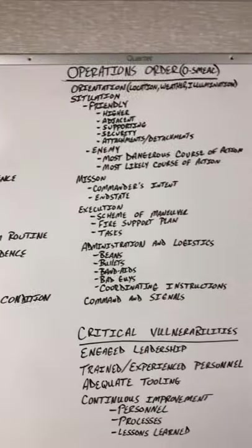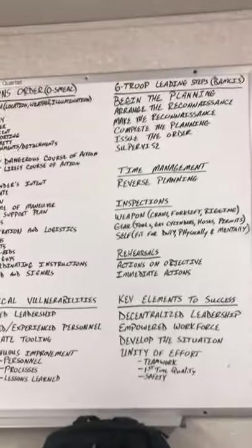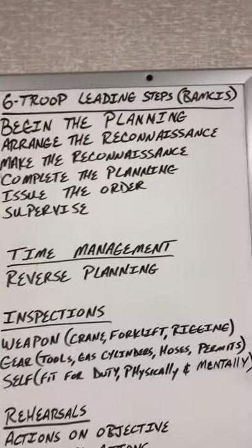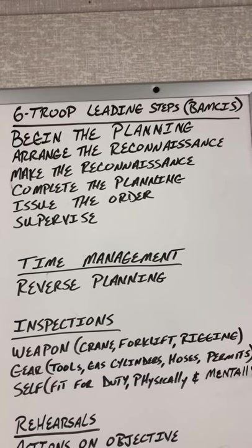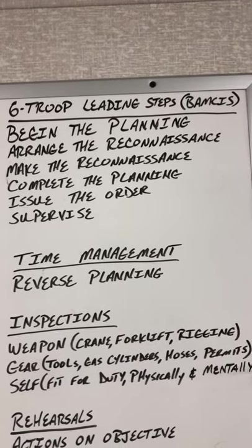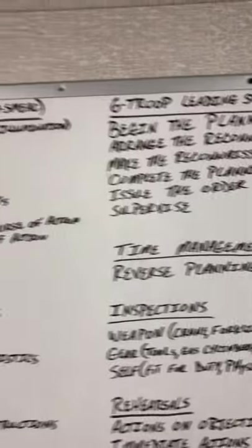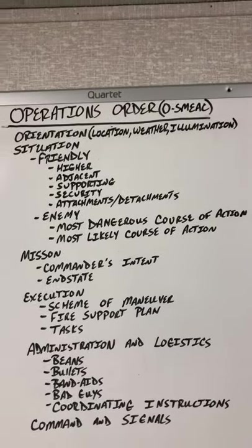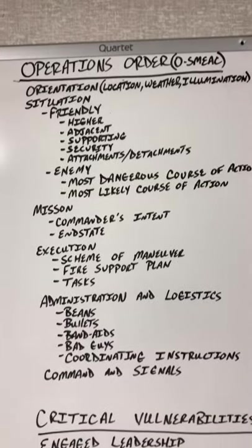If we're going to have a campaign plan, we're going to address things tactically. We'll start off with the leadership fundamentals — the six troop leading steps — remembered by the acronym BAMSIS: Begin the planning, Arrange for the reconnaissance, Make the reconnaissance, Complete the planning, Issue the order, and Supervise. The order we're talking about is the operations order, remembered by the acronym OSMEAC: Orientation, Situation, Mission, Execution, Administration/Logistics, and Command and Signals.